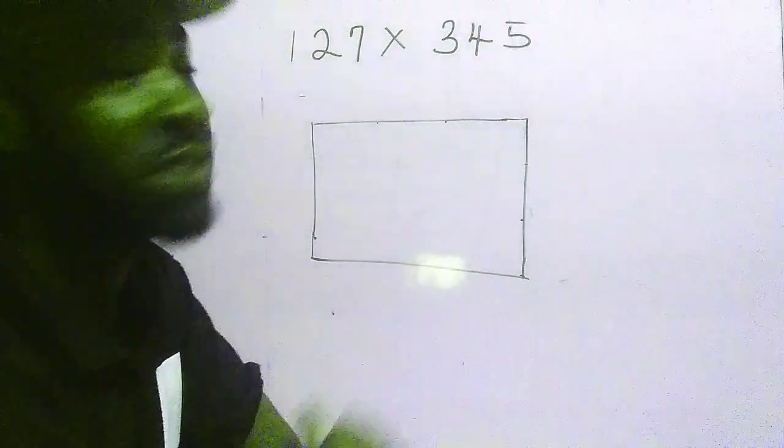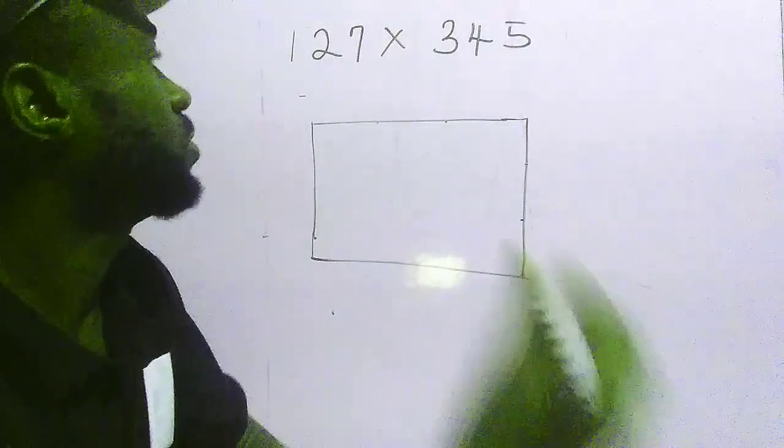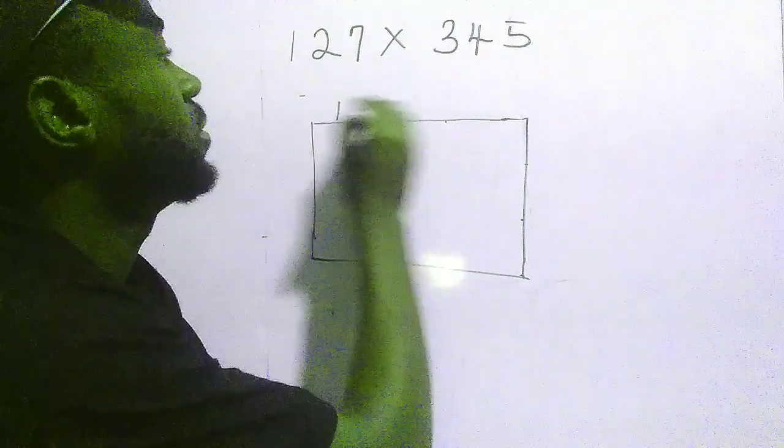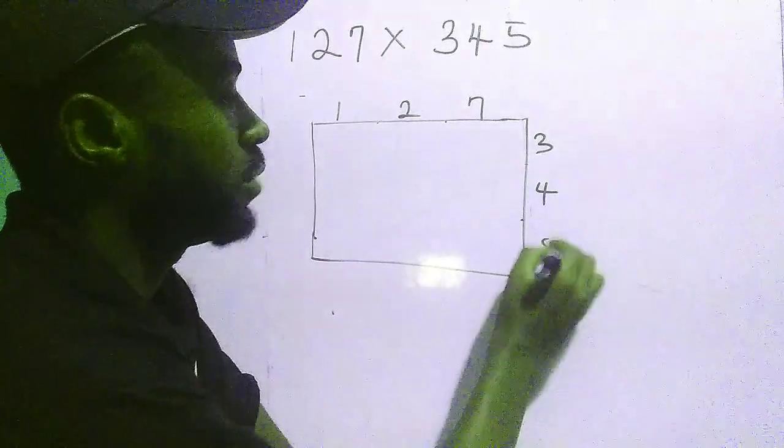I have 127 times 345. First, I'll put 127 on top of the box, and 345 by the side of the box.